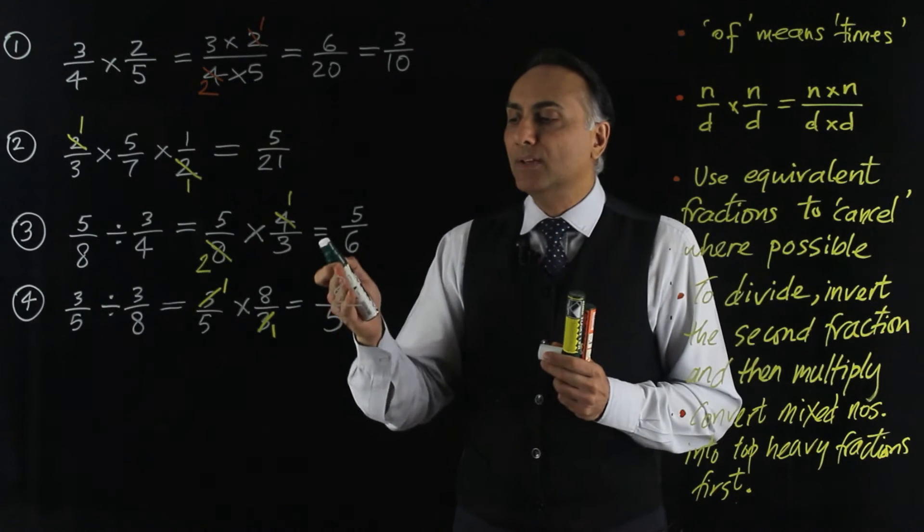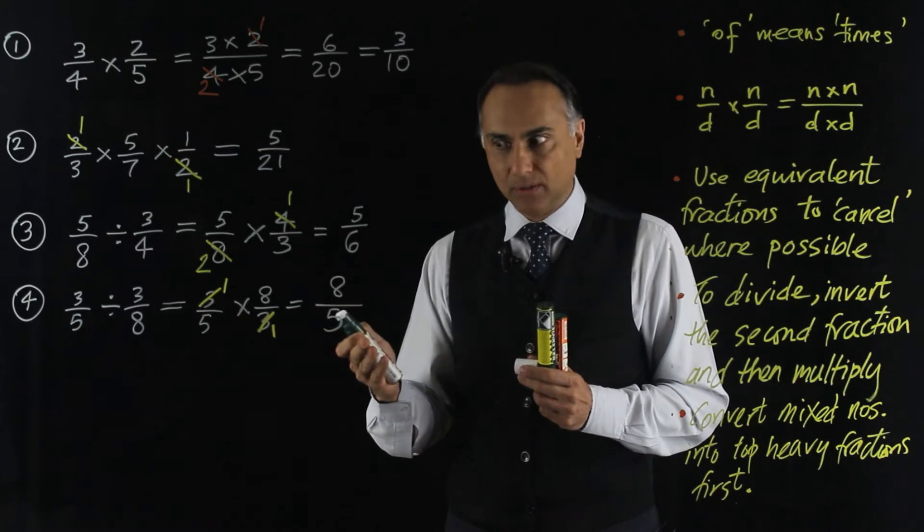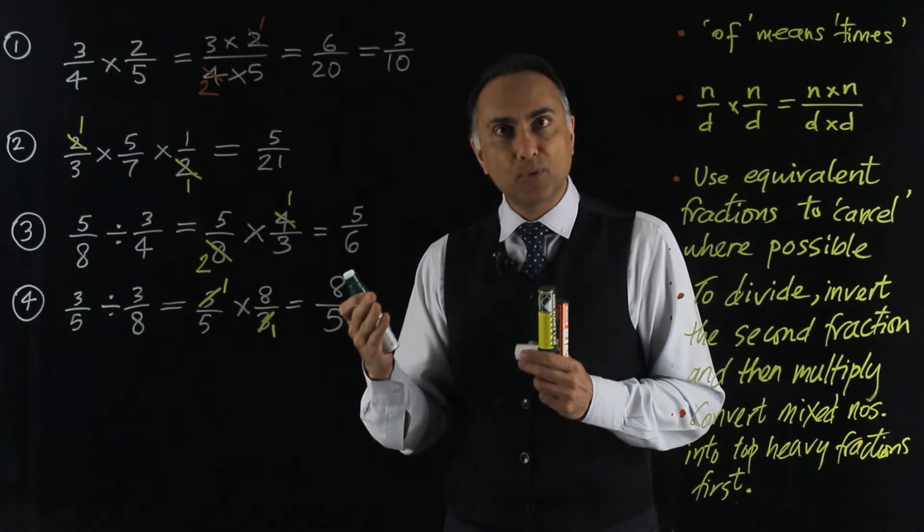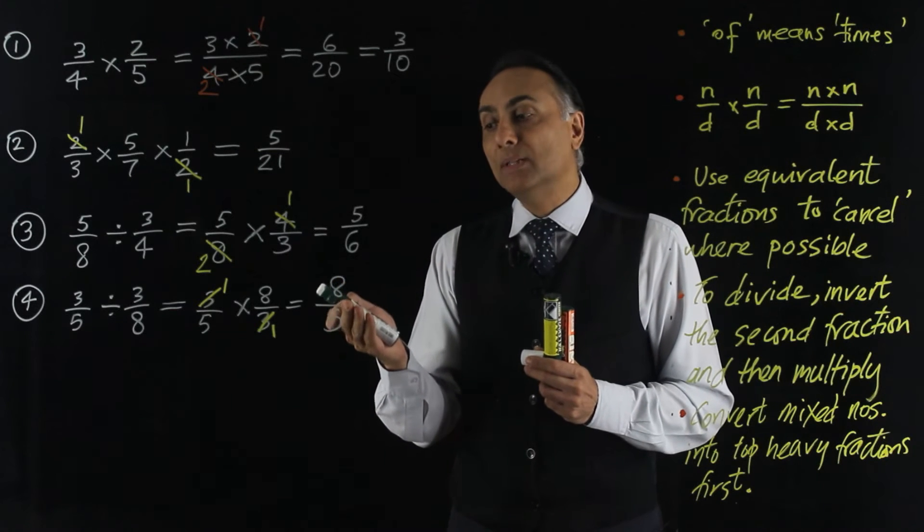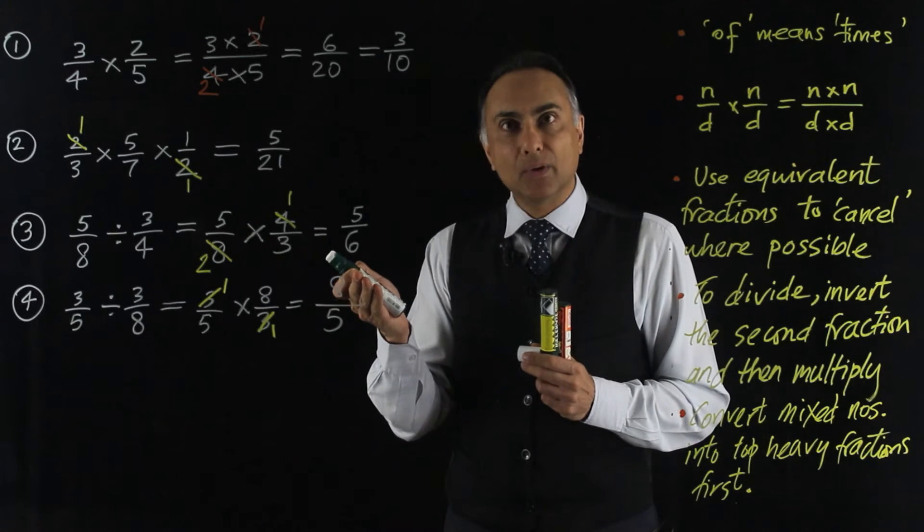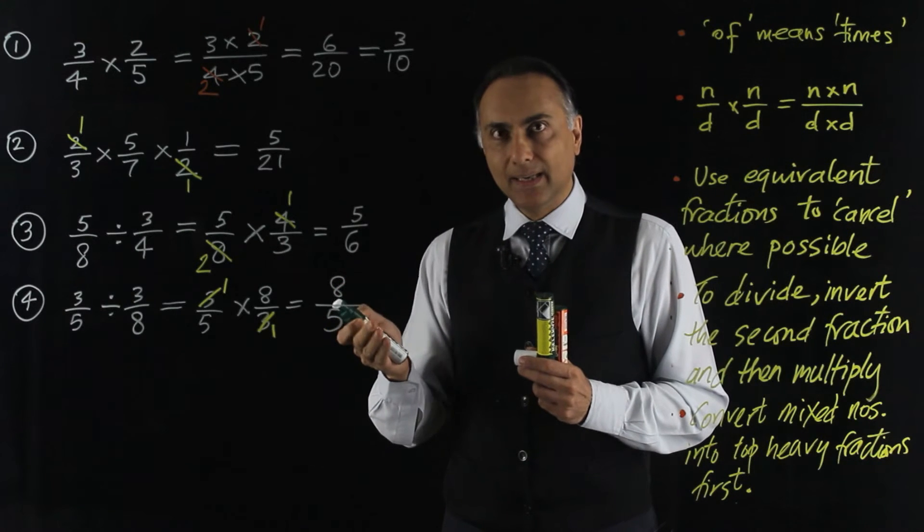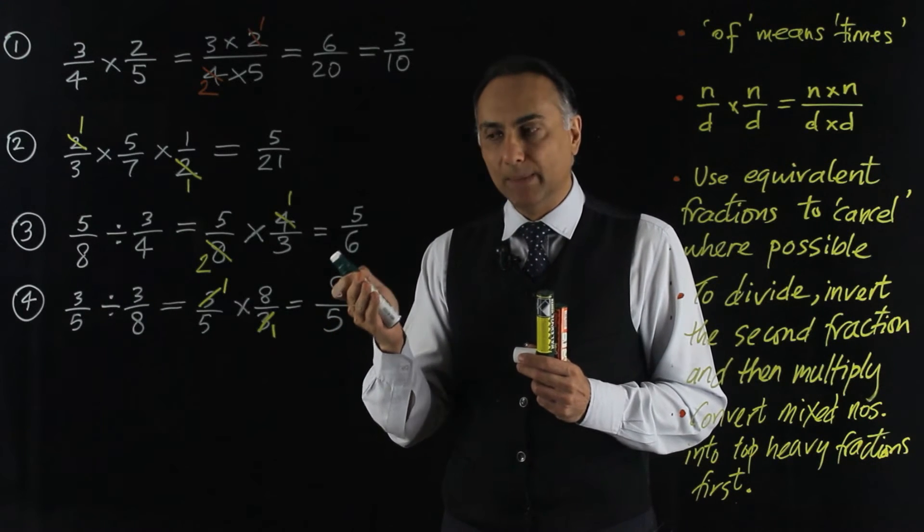Now, 8 over 5 is called a top-heavy fraction. Another name for it is an improper fraction. So in other words, whenever the numerator is greater than the denominator, it's called top-heavy or improper.